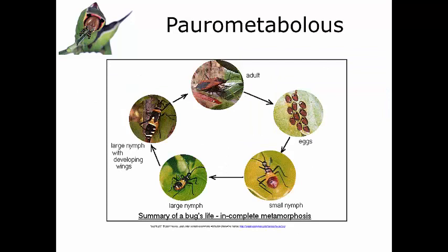The next type of development is called parometabolous. 'Paro' means slight, so in parometabolous development there's only a slight change between each developmental stage. The insects lay their eggs — they oviposit their eggs — and the eggs hatch into young nymphs. We call the young of this type of development nymphs as well. The nymphs develop a little bit and turn into older nymphs with slightly different body forms, developing further until they reach the adult stage.